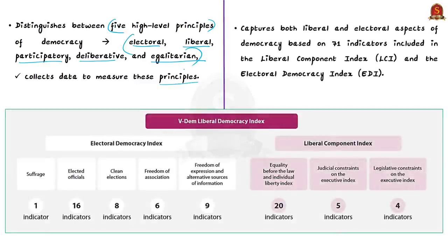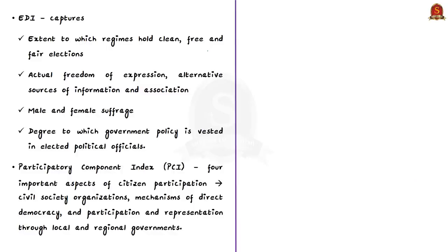The Liberal Democracy Index captures both liberal aspects and electoral aspects of democracy. It is based on 71 indicators included in the liberal component index and the electoral democracy index. The electoral democracy index reflects a relatively ambitious idea of electoral democracy, where institutional features guarantee free and fair elections such as freedom of association and freedom of expression. It captures not only clean elections but also freedom of expression, alternative information sources, association, male and female suffrage, and the degree to which government policy is vested in elected officials.